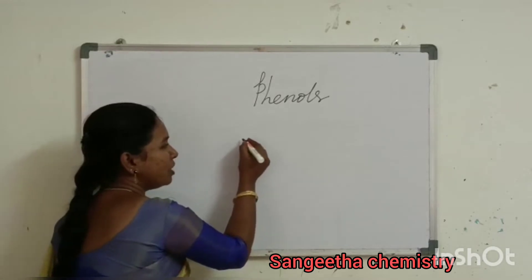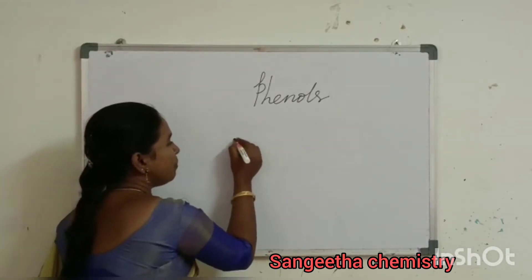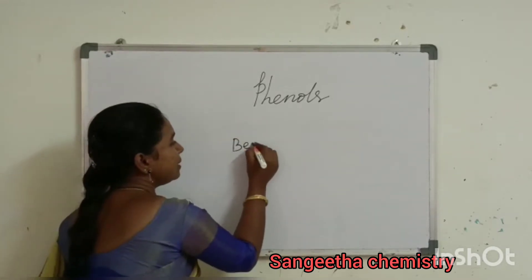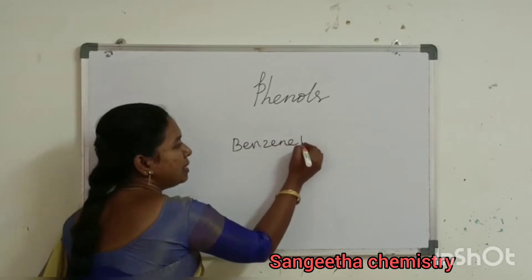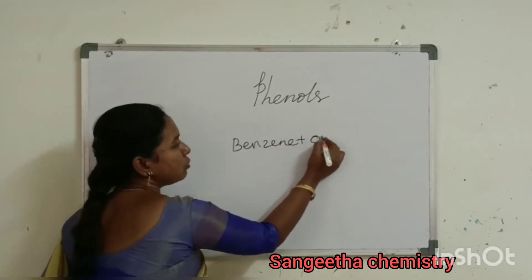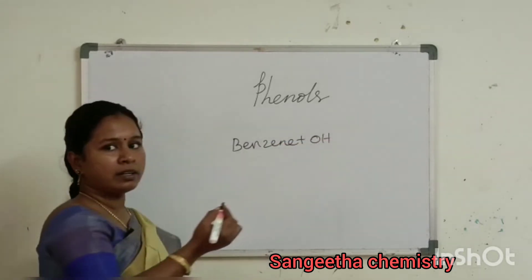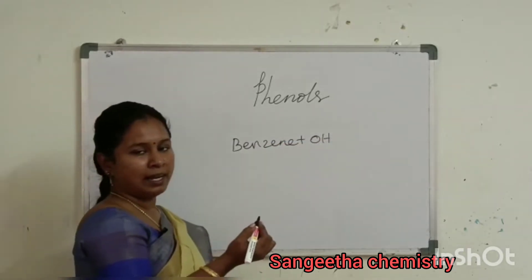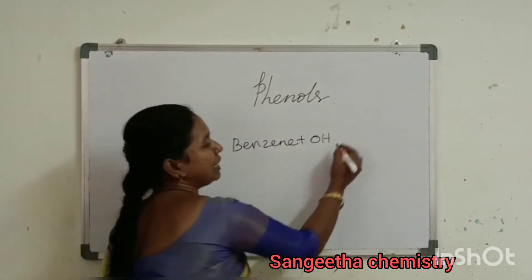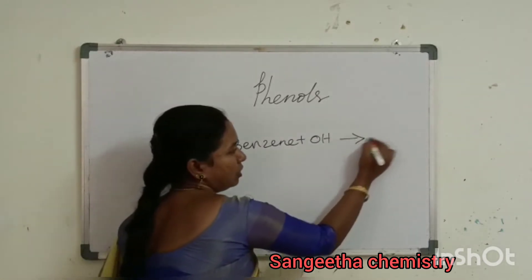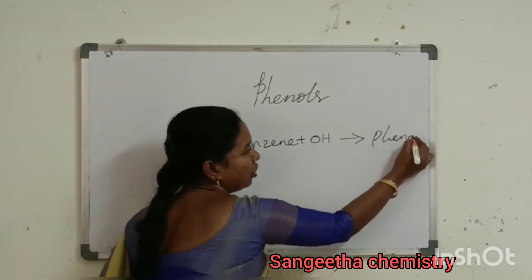We should know what is benzene. Benzene plus OH group — that is the alcoholic group, that is the hydroxyl group. That is phenol. What is phenol? Phenol.